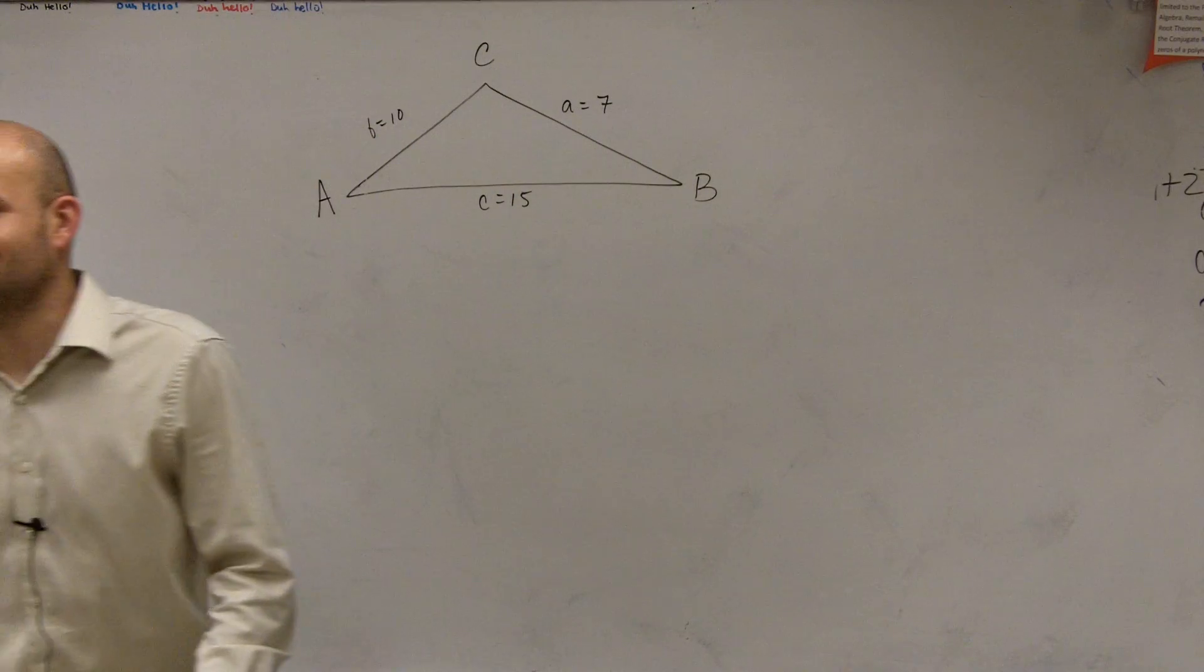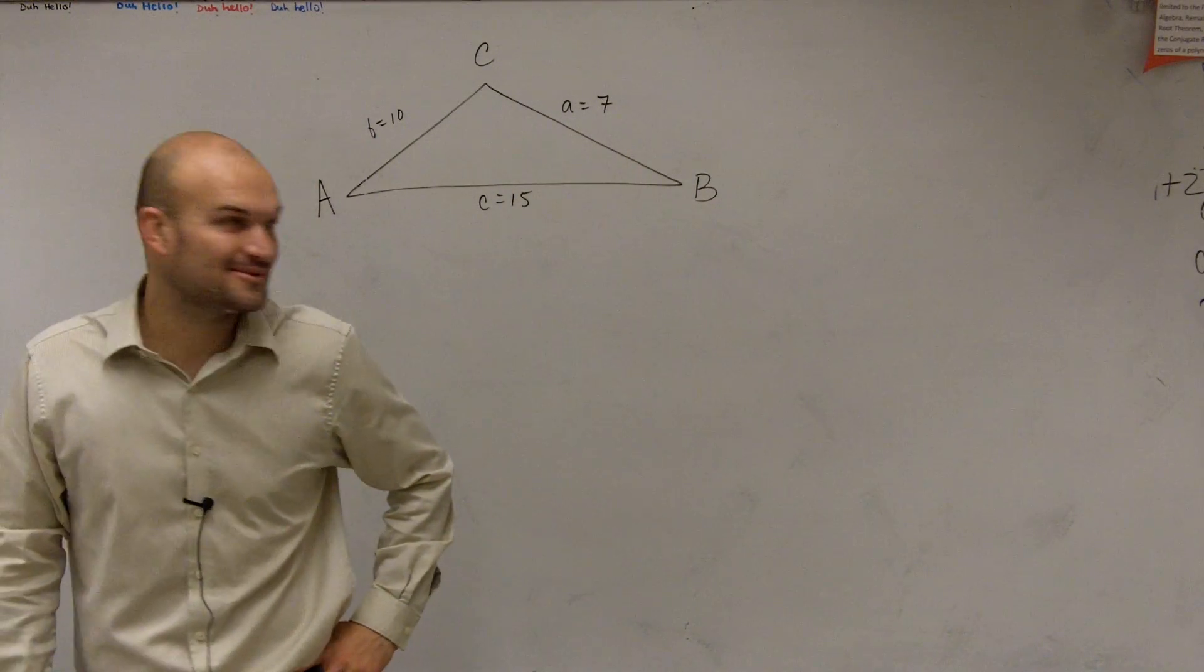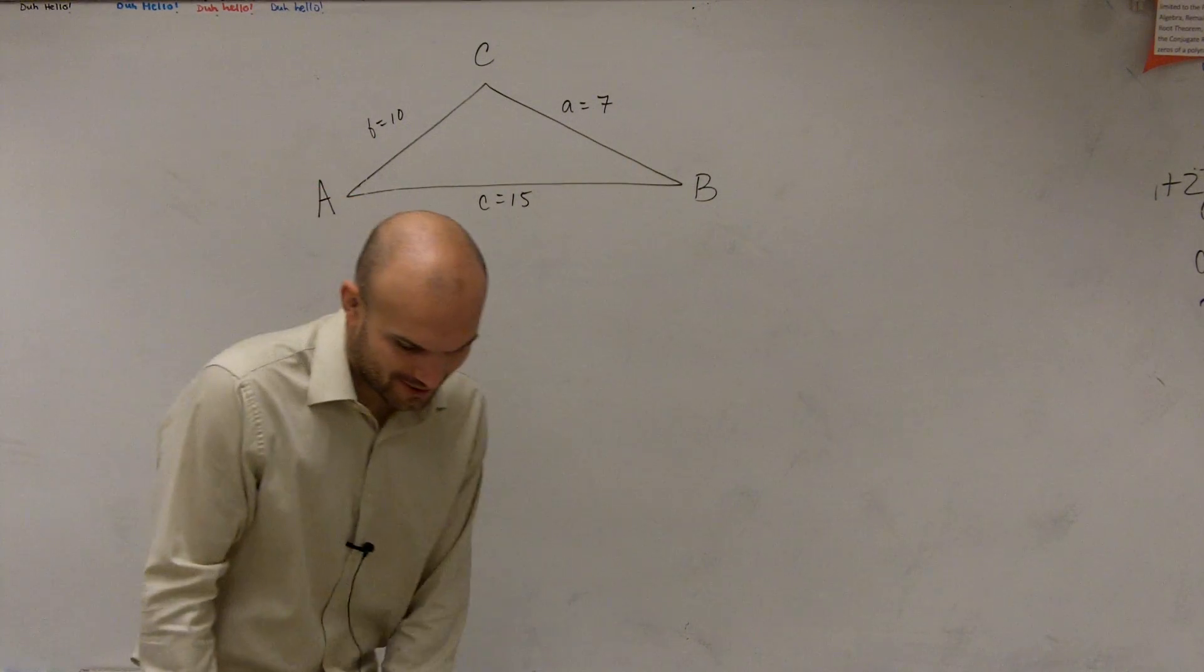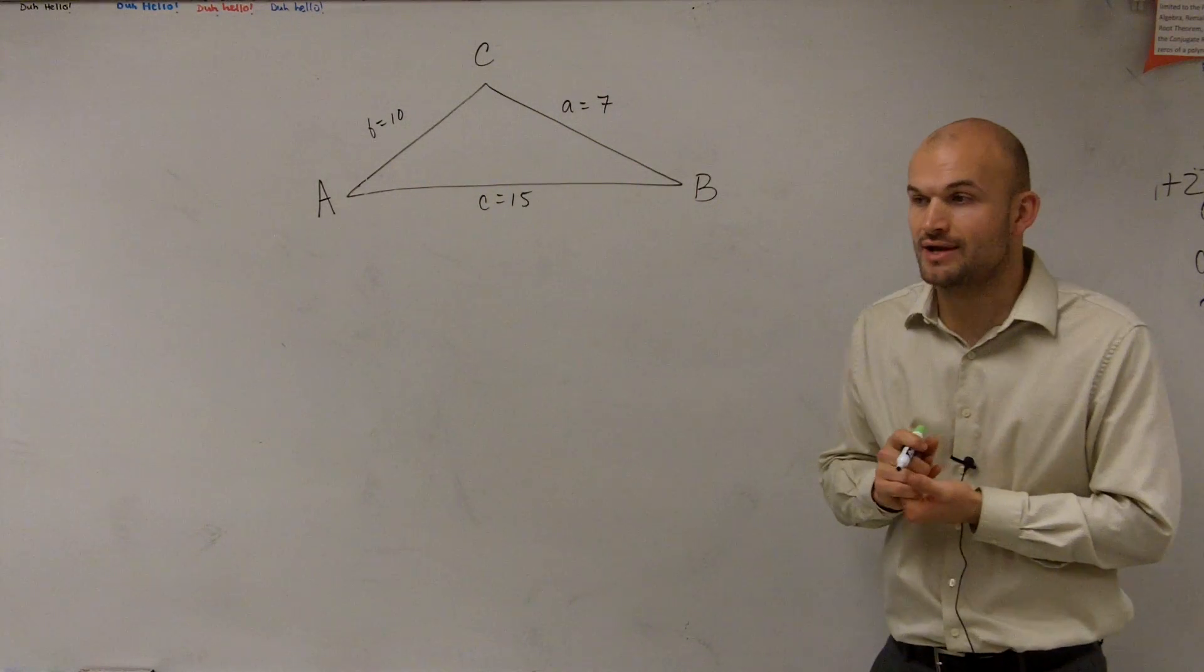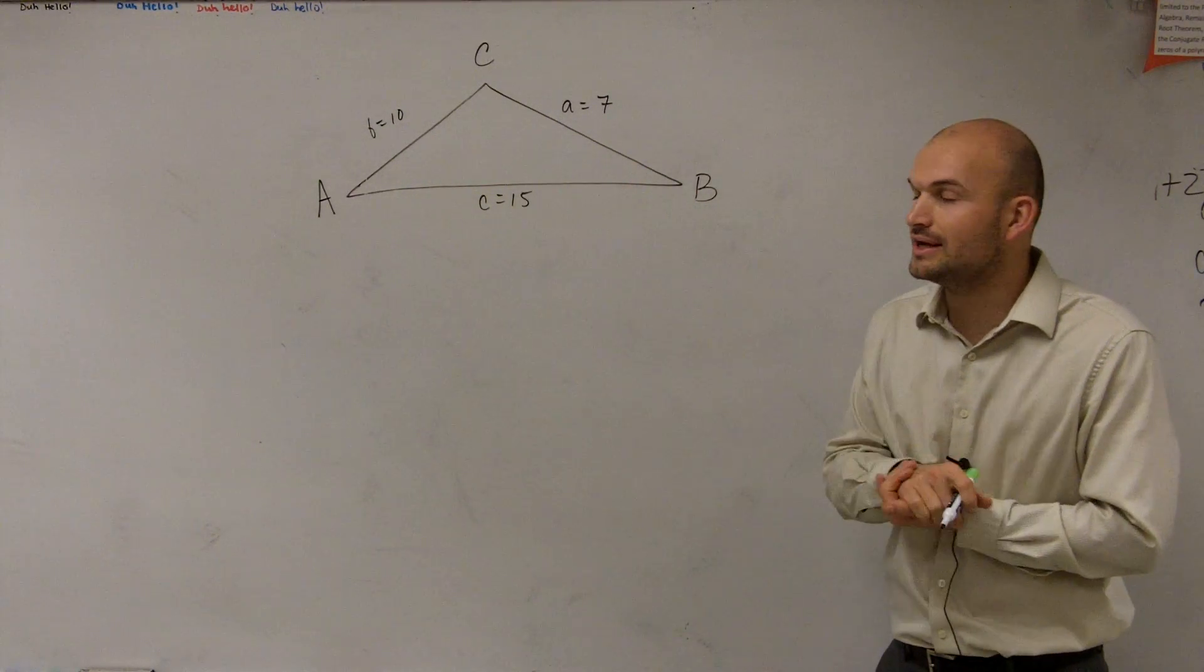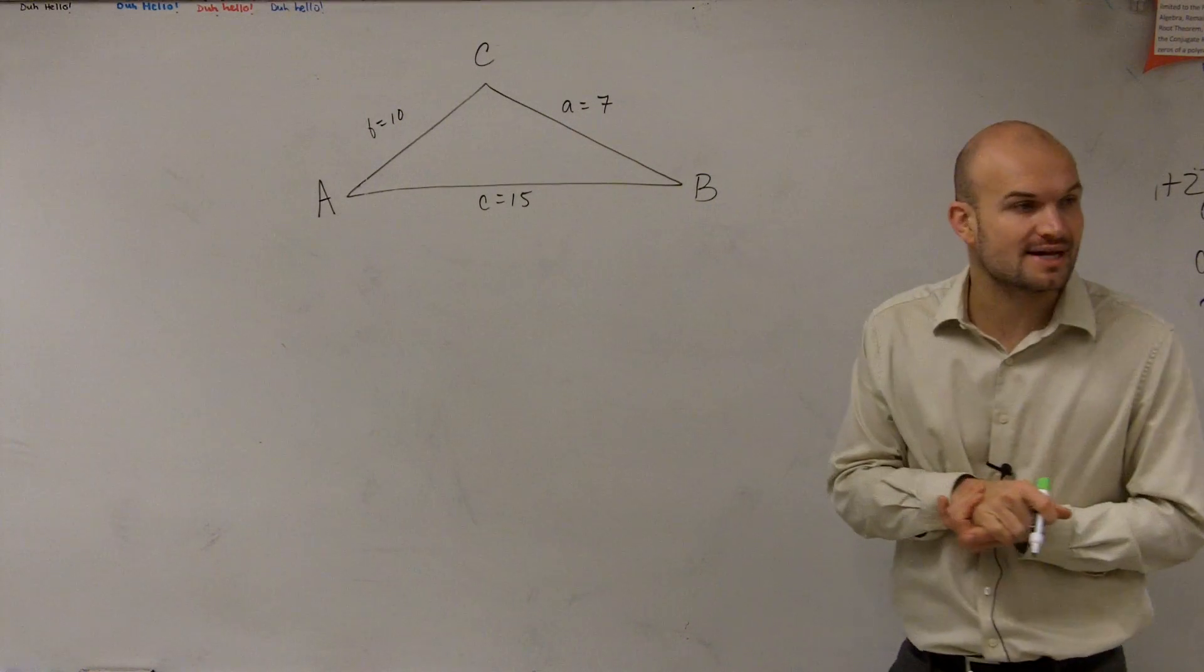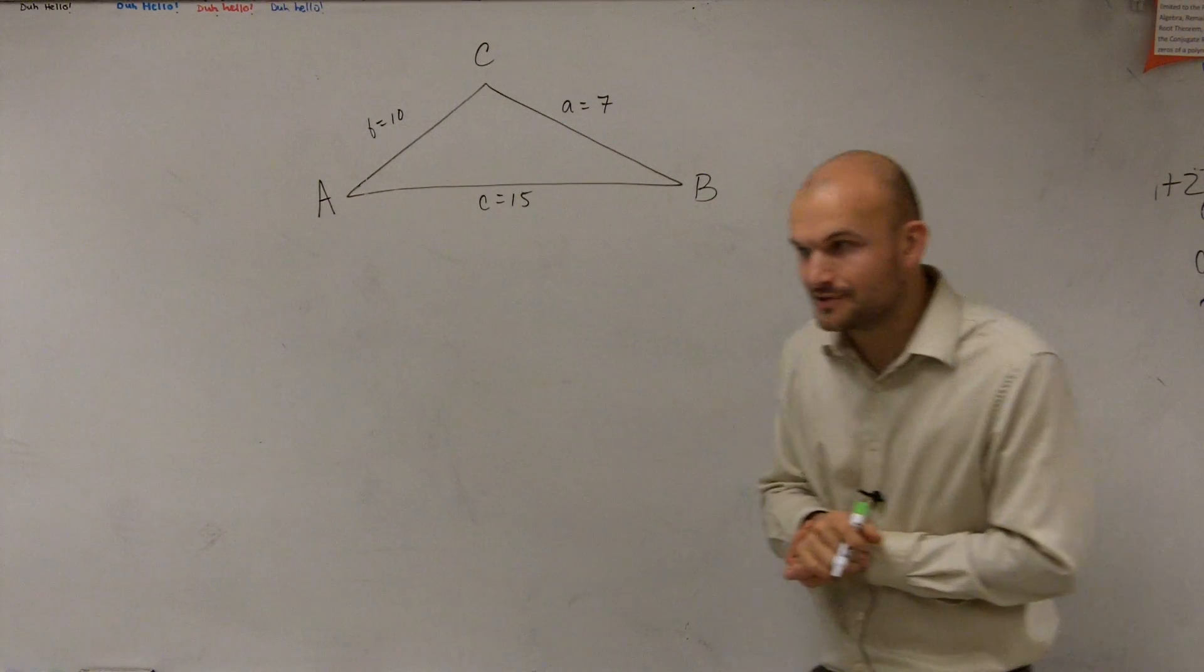Alright, so what I want to do is go over how to solve or find the missing values of this triangle. What we're given over here is a triangle and we're given all the side lengths. But we're not given any of the angles.